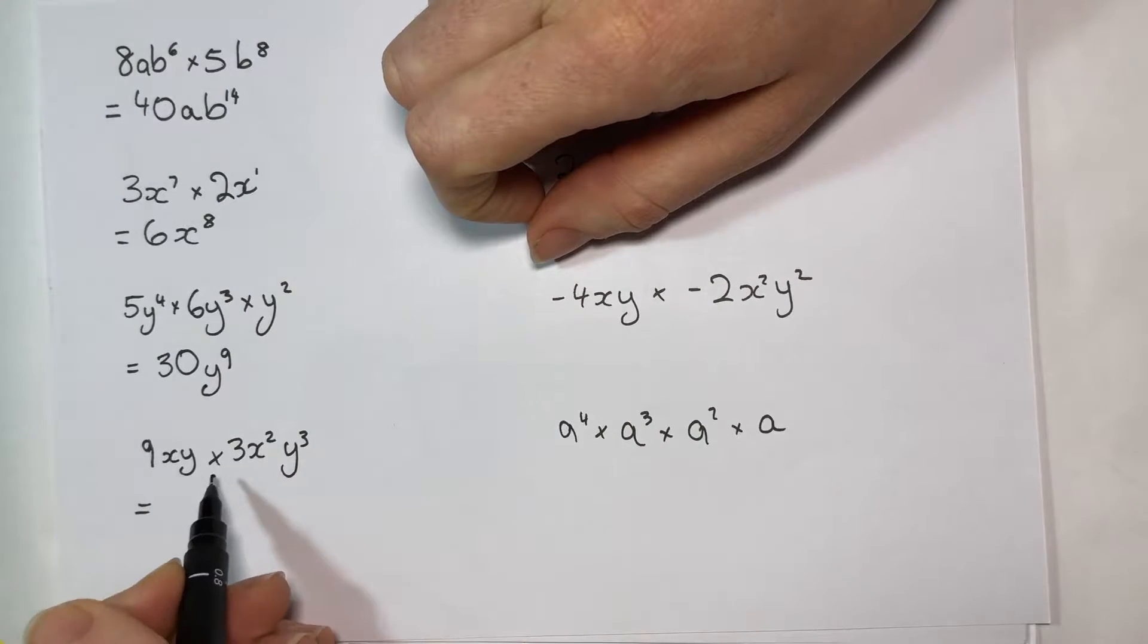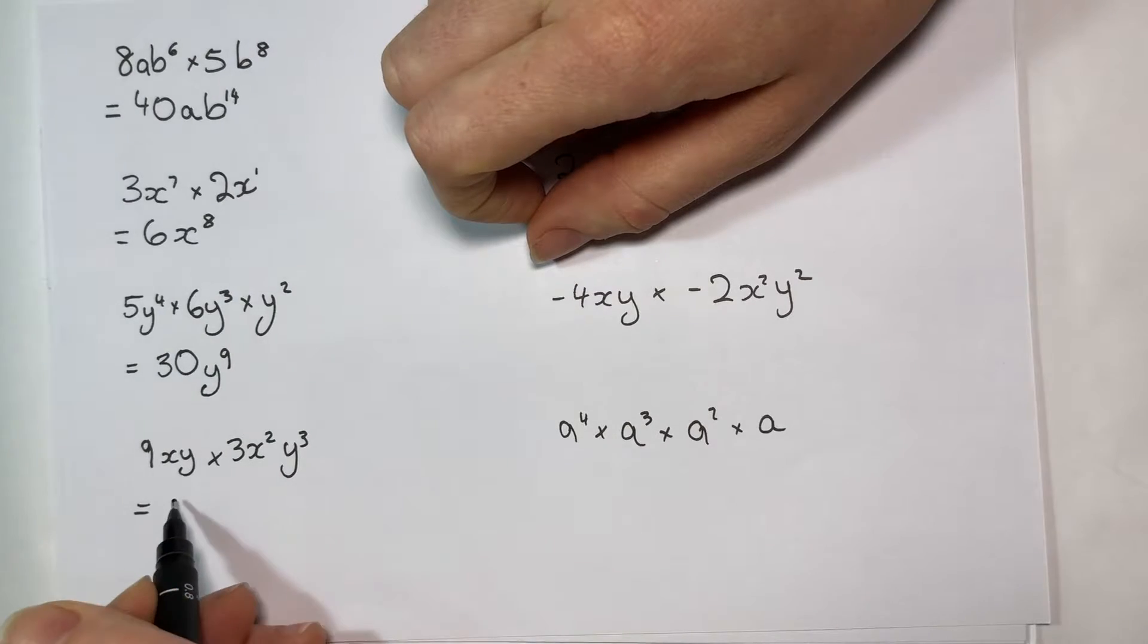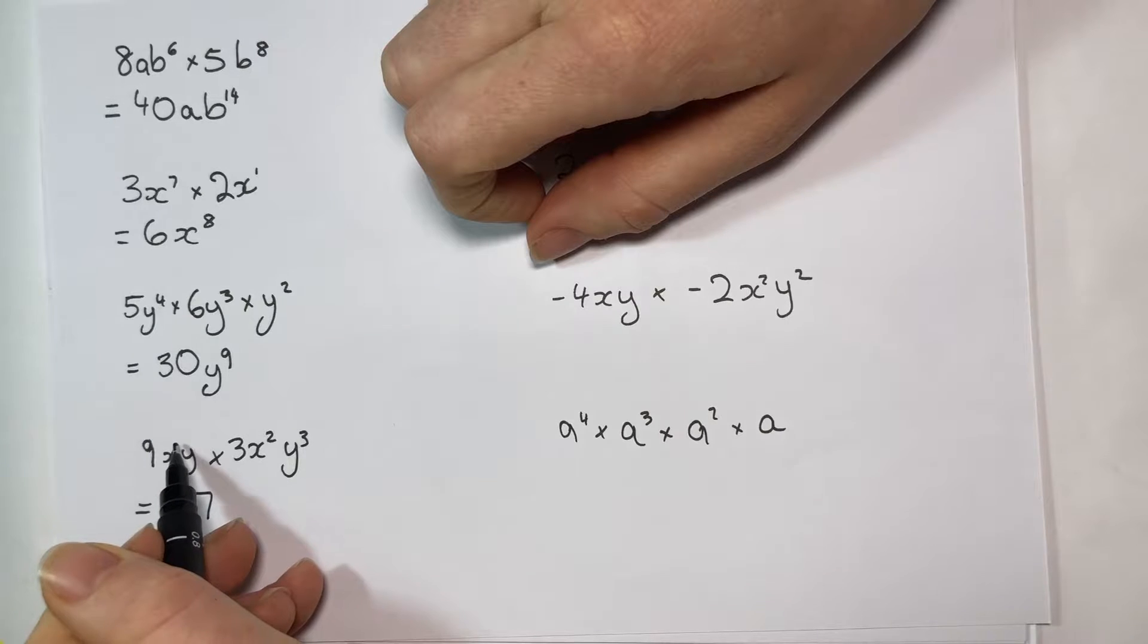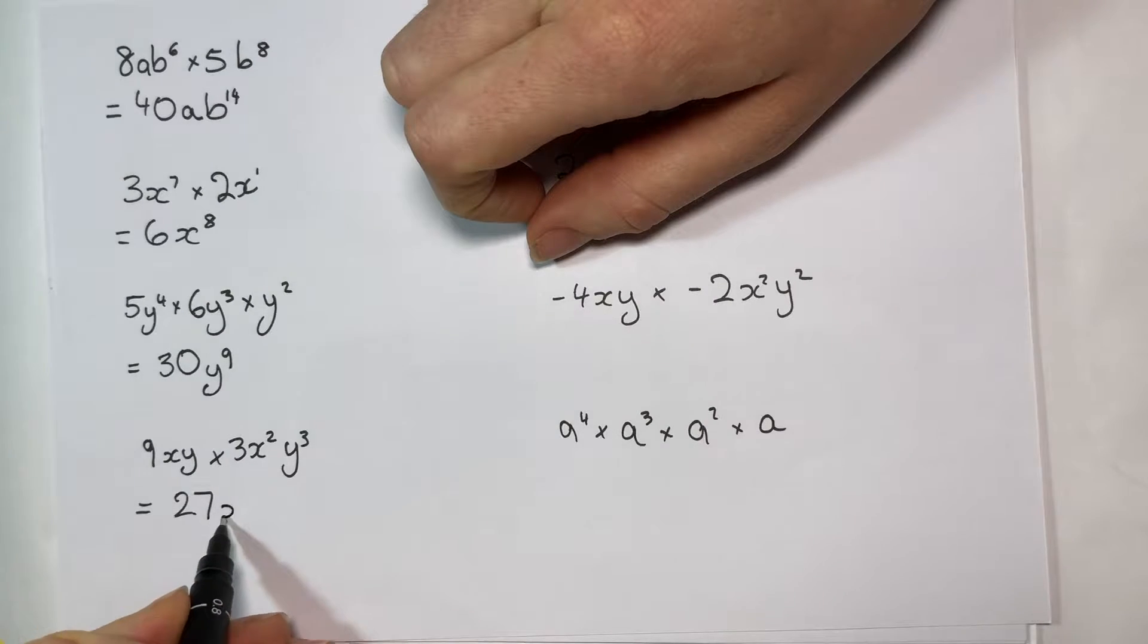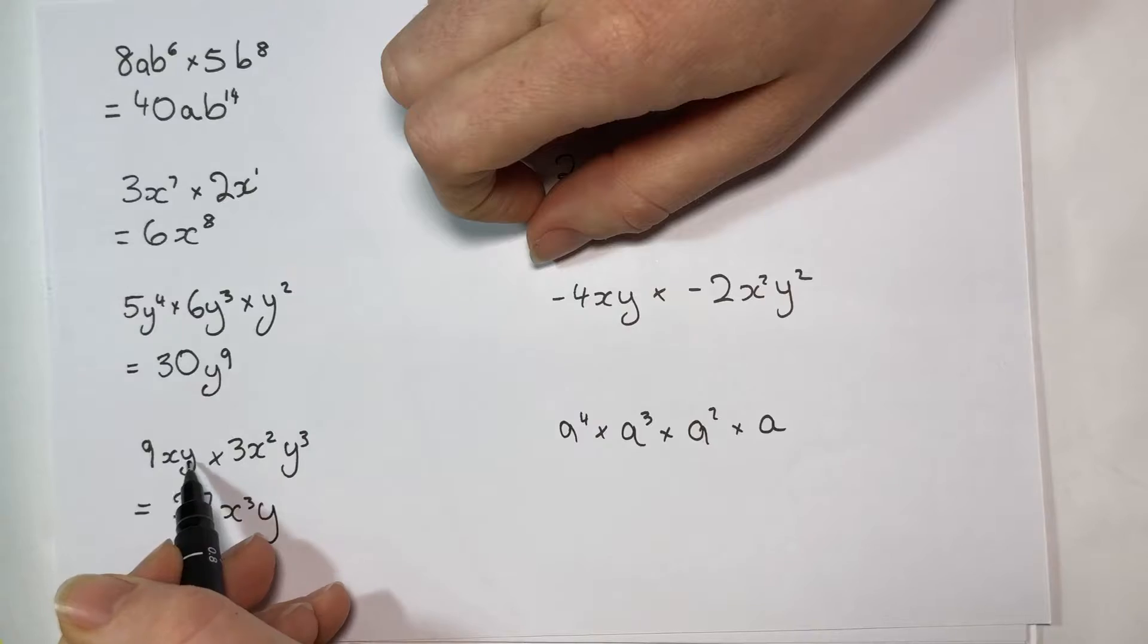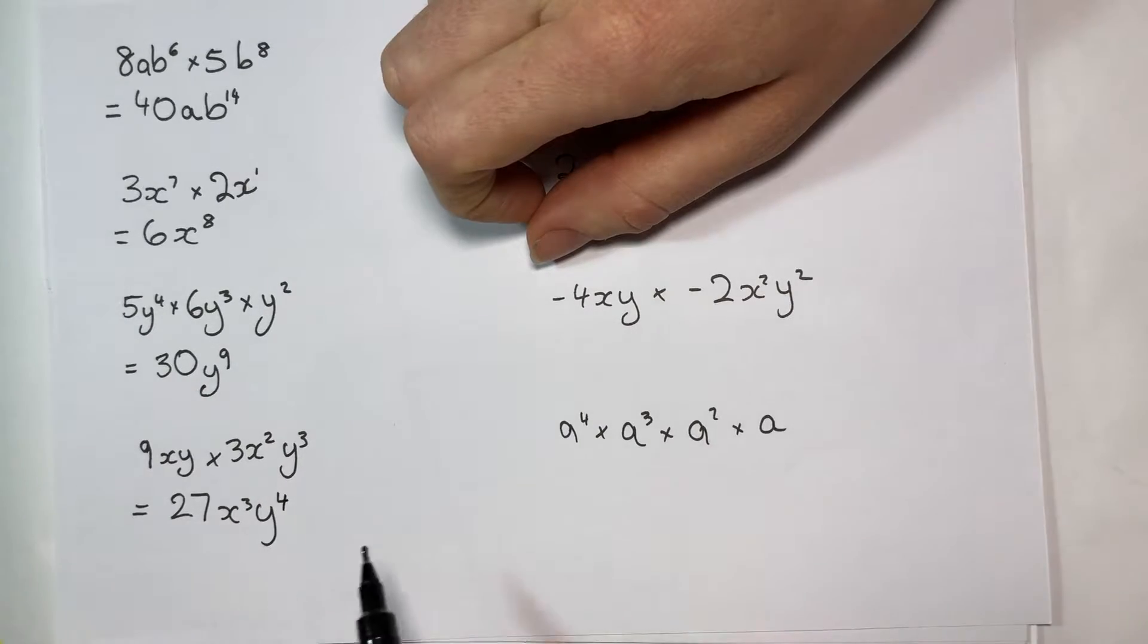Over here, 9 times 3, the big numbers, 27. x has got a 1, so there's 1 of them here and 2 of them there, so 3 all together. And there's 1y here and 3 here, so 4 all together.